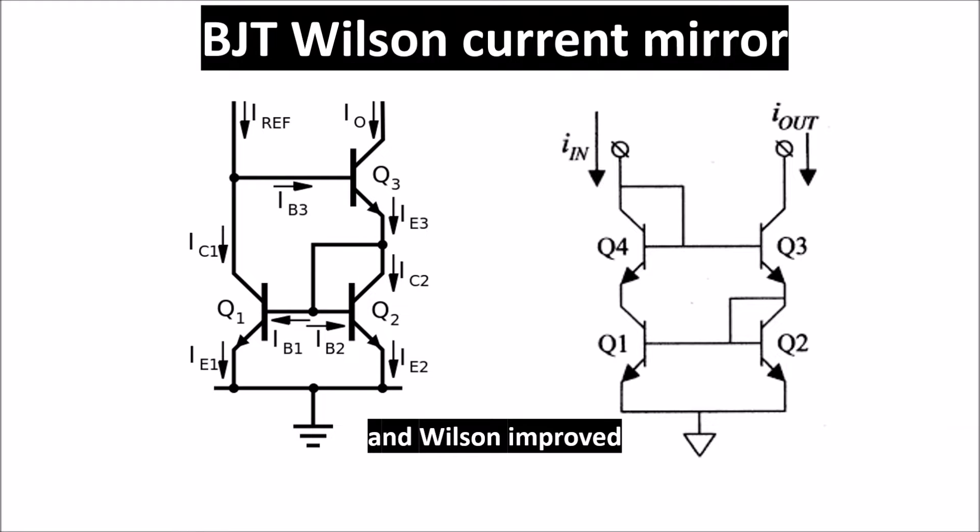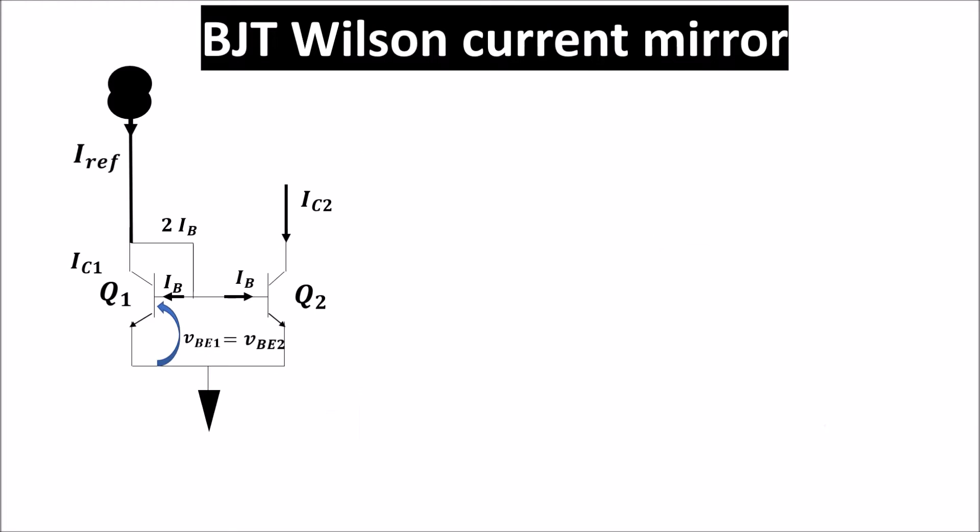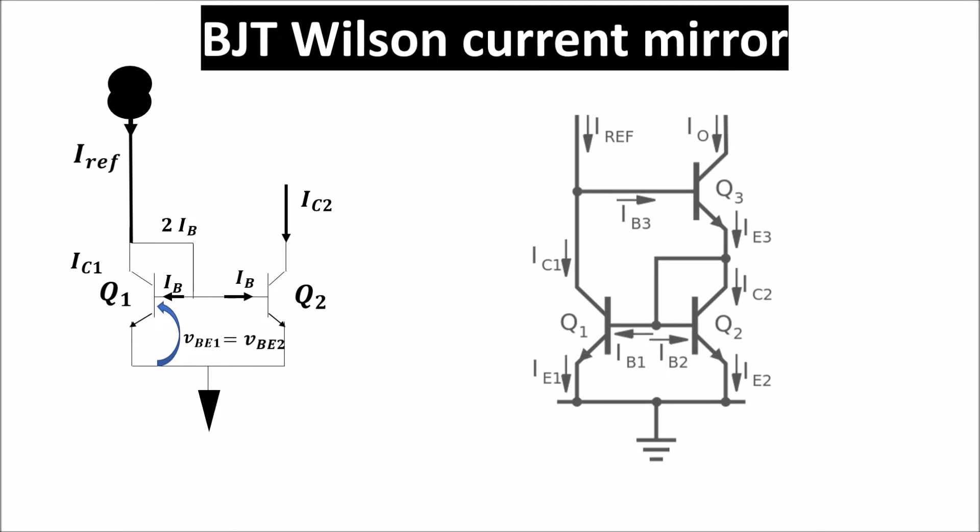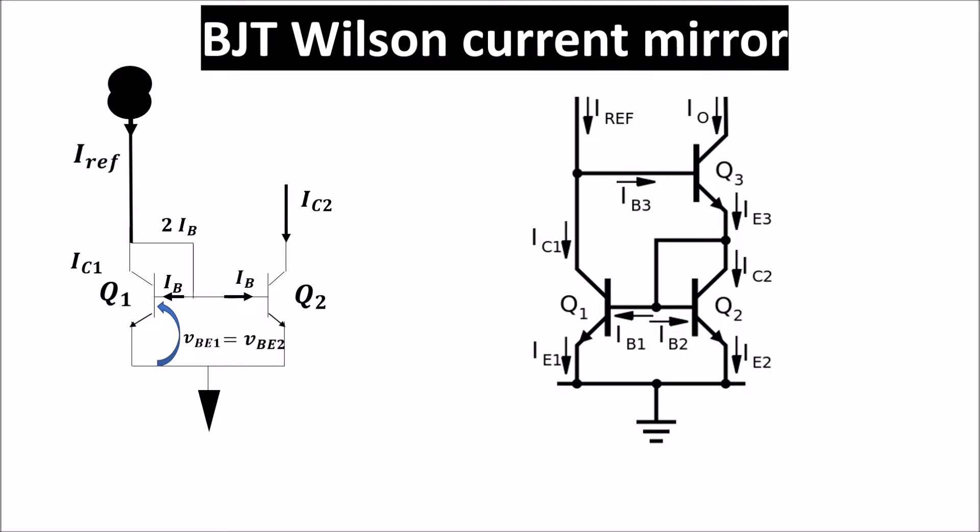This video is about BJT Wilson current mirror. We see the transfer current ratio and the output resistance of this configuration. In 1967, George Wilson was challenged to find an improved current mirror overnight that would use only three transistors. Wilson won the challenge with this elegant configuration. Let's see how it works.